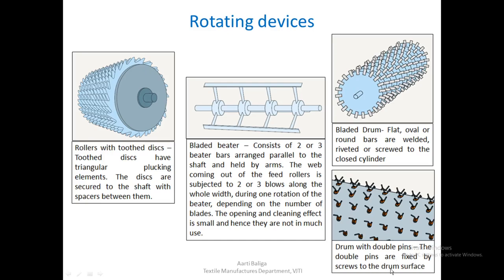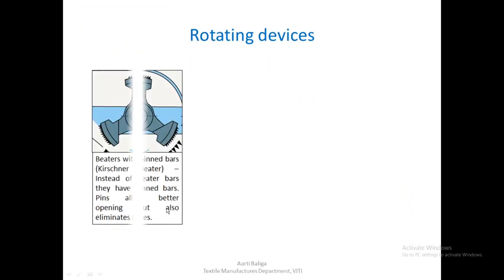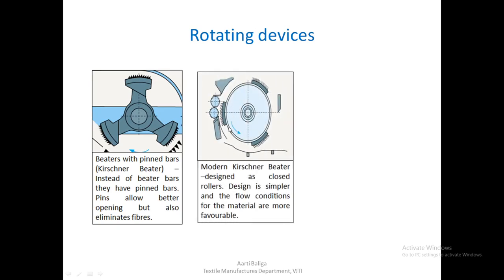Beaters with pinned bars have pins on the bar surface, allowing for better opening. Such beaters were known as Kirschner beaters. A slightly modern version uses a closed roller design. In the earlier design, material could accumulate between two blades and keep rotating with the beater without being opened. The closed design has no space for fiber accumulation, so the design is simpler and flow conditions for the material are much more favorable. One may also have six bars all over the circumference instead of three.